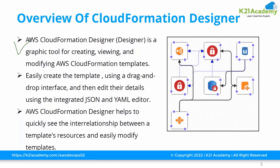It will also easily create the template using a drag-and-drop interface. We can drag and drop resources and it is going to create a template accordingly. Once you drag and drop, you then edit the details in an integrated JSON and YAML editor. For example, if I've decided I want EC2, S3, and RDS, I drag and drop those particular resources into the designer and a template gets created. Then go to the editor in the bottom terminal, where you have the option of JSON and YAML, and add additional details or customization.